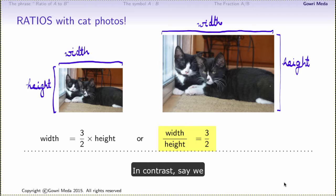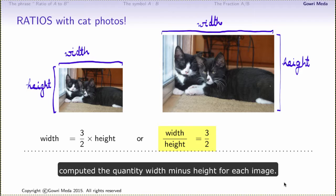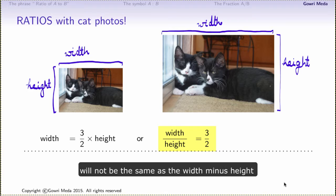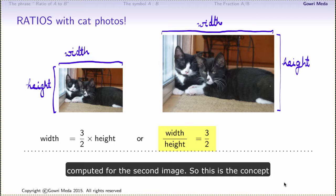In contrast, say we computed the quantity width minus height for each image. Then the width minus height for the first image will not be the same as the width minus height computed for the second image. So this is the concept underlying the topic of ratios.